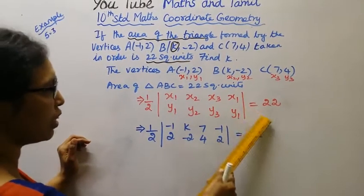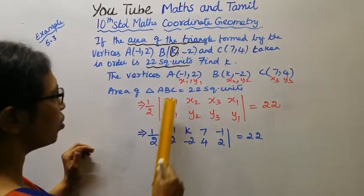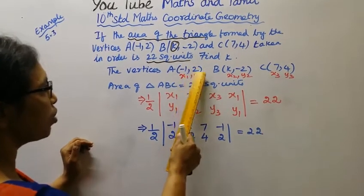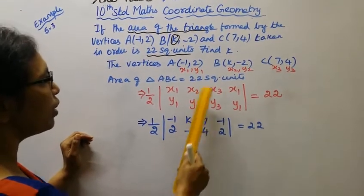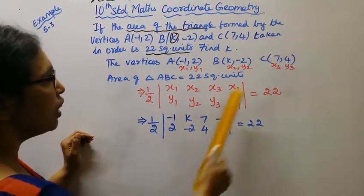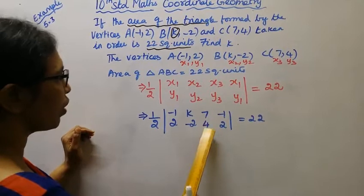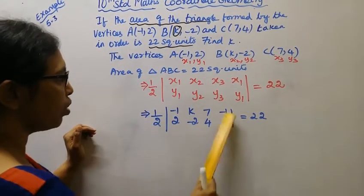This is equal to 1 by 2. x1, y1 is -1, 2. x2, y2 is k, -2. x3, y3 is 7, 4. So again, x1, y1 is -1, 2, equal to 22.